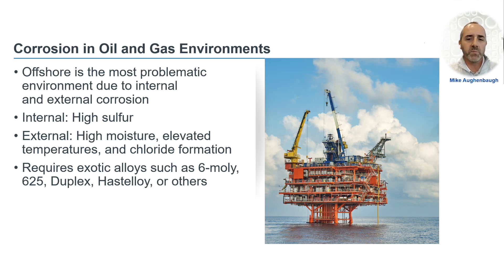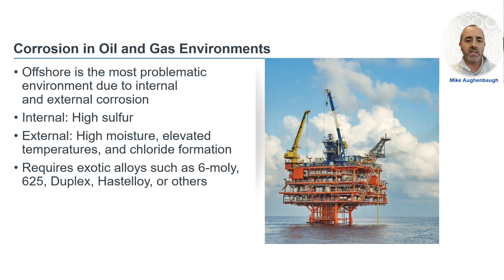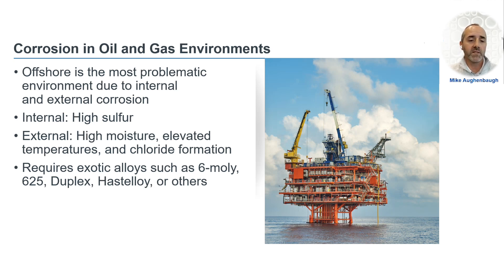Offshore environments are usually the most problematic, and you're dealing with two issues: internal and external corrosion. The downstream and chemical side usually only affects the inside of piping and tubing systems. On the inside, you'll be dealing with high sulfur from crude, which can be an issue with certain metals, or just the general abrasive nature of the fluid at high velocities. On the outside, you'll have environmental conditions with high moisture, elevated temperatures, and chloride formation, which can rapidly corrode fluid systems. These metallurgies will usually be high exotic alloys such as 6-moly, 625, duplex, Hastelloy, or other alloys that resist crevice and pitting corrosion better than standard stainless steel.